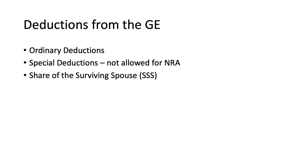Also, the share of the surviving spouse will be deducted from the gross estate. This is because the conjugal or community property of the decedent is included in the gross estate, which means the surviving spouse's share is also included in that total. After determining the total gross estate, the share of the surviving spouse from the conjugal or community property will be deducted, because that share is not the property of the decedent.